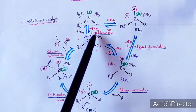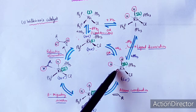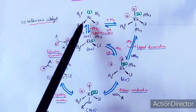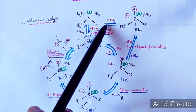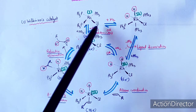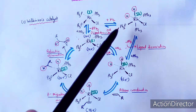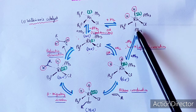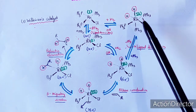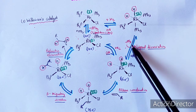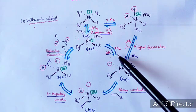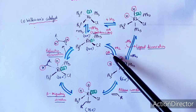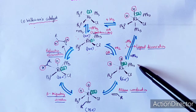The first step is ligand dissociation and the second step is oxidative addition. The same product can also be formed through an alternate pathway: the stable catalyst first reacts with H2 by oxidative addition, converting Rh(I) to Rh(III) with increased coordination number, followed by ligand dissociation. So these two steps — oxidative addition then ligand dissociation, or ligand dissociation then oxidative addition — can occur in either order, yielding the same 16-electron system.